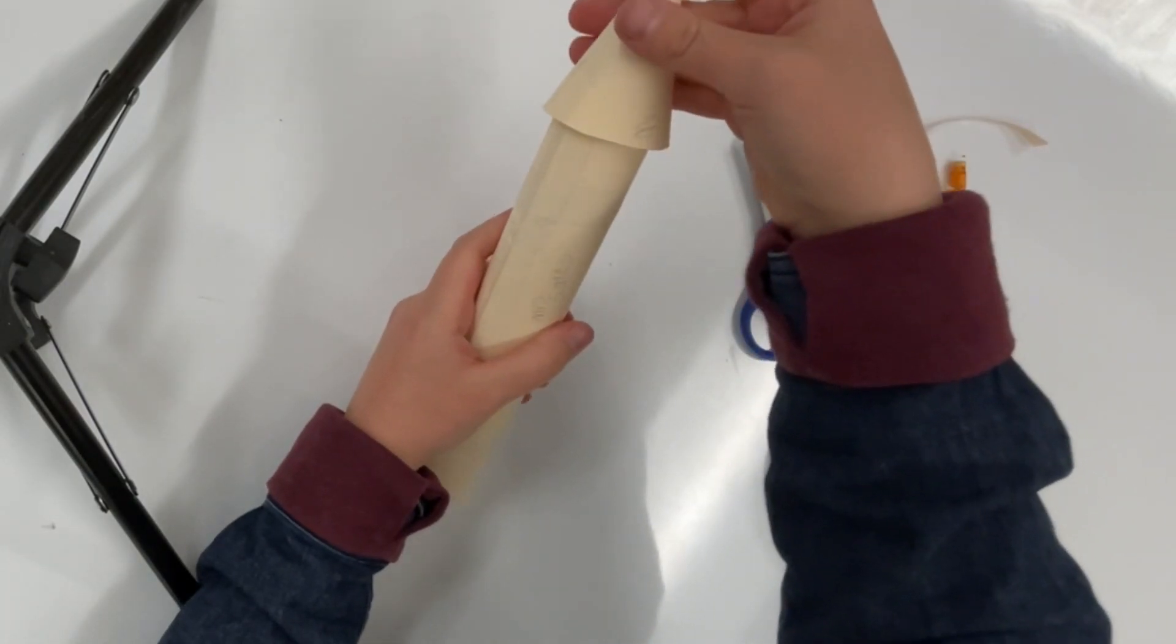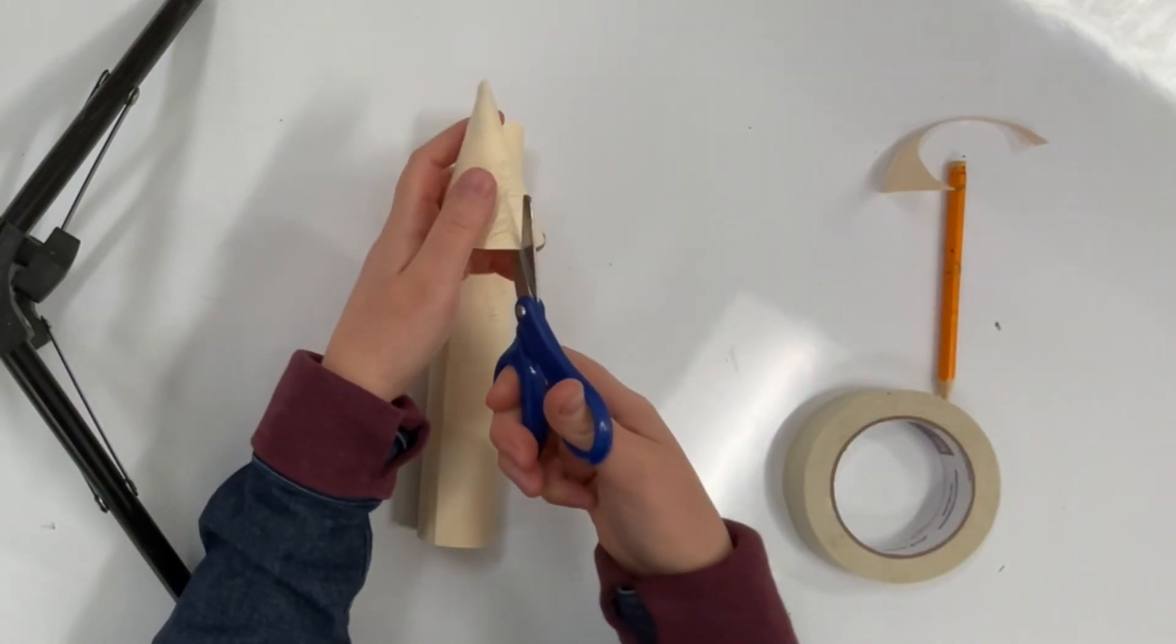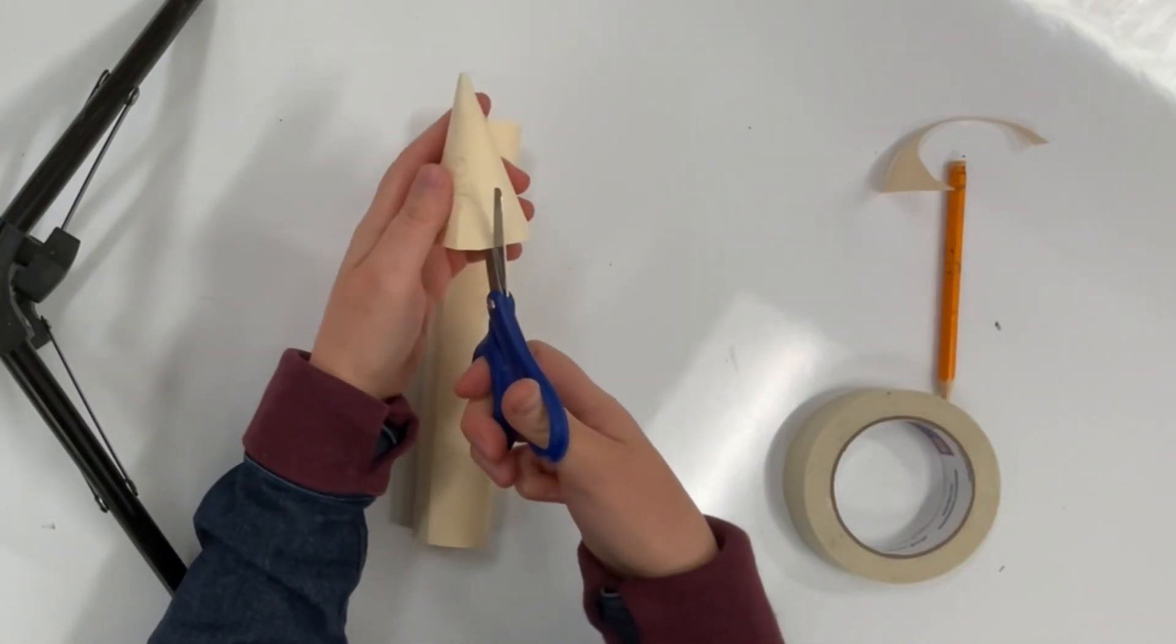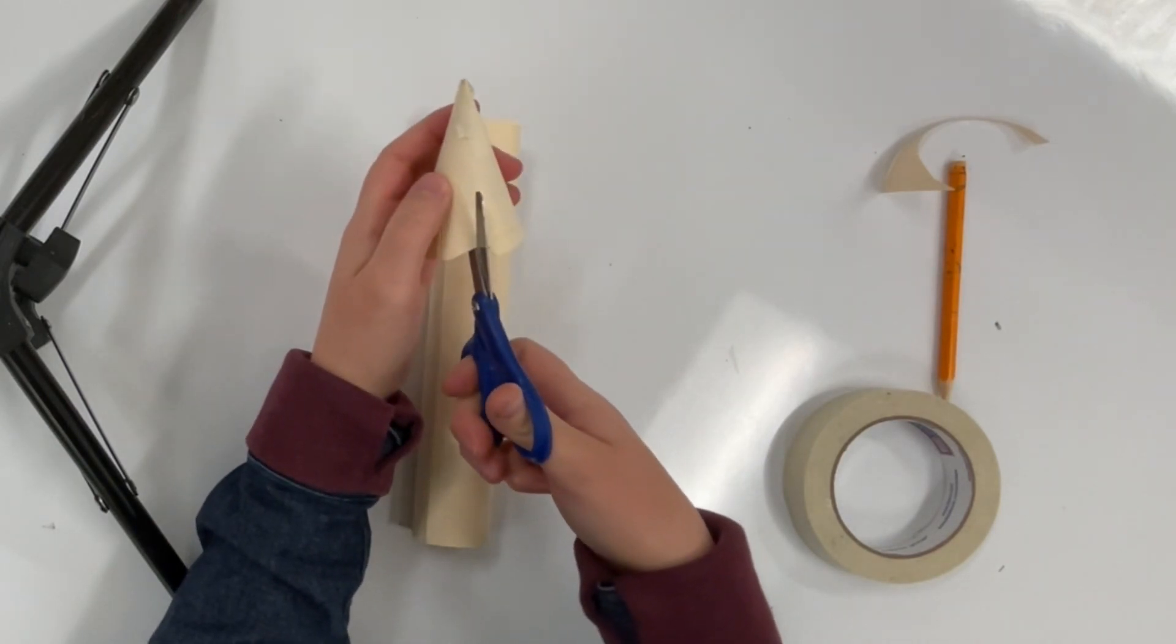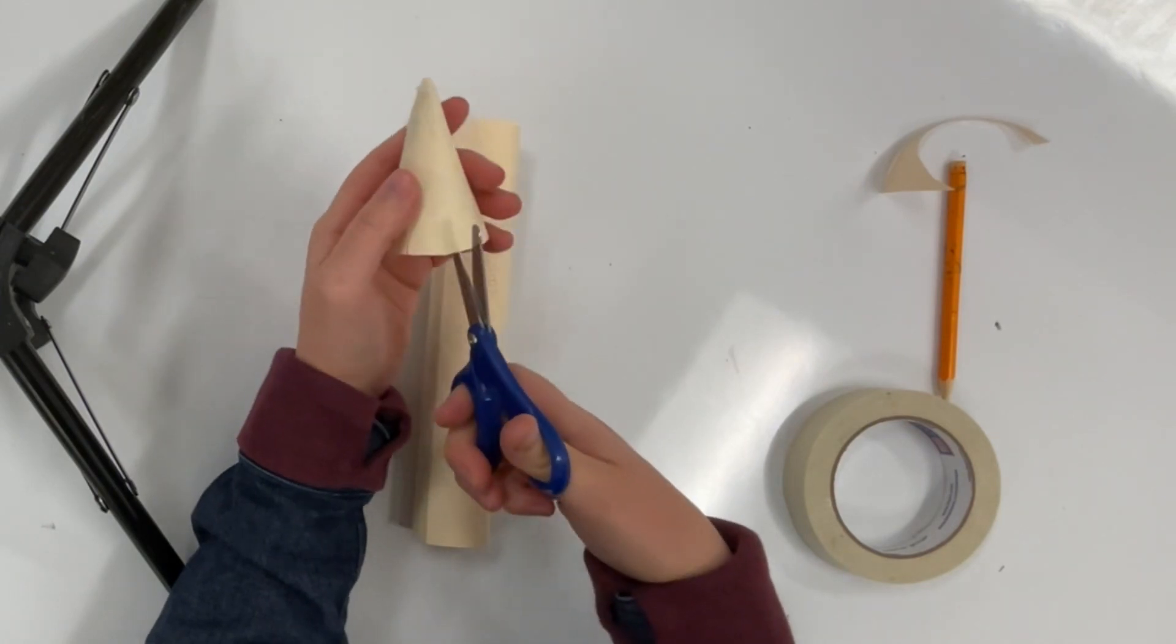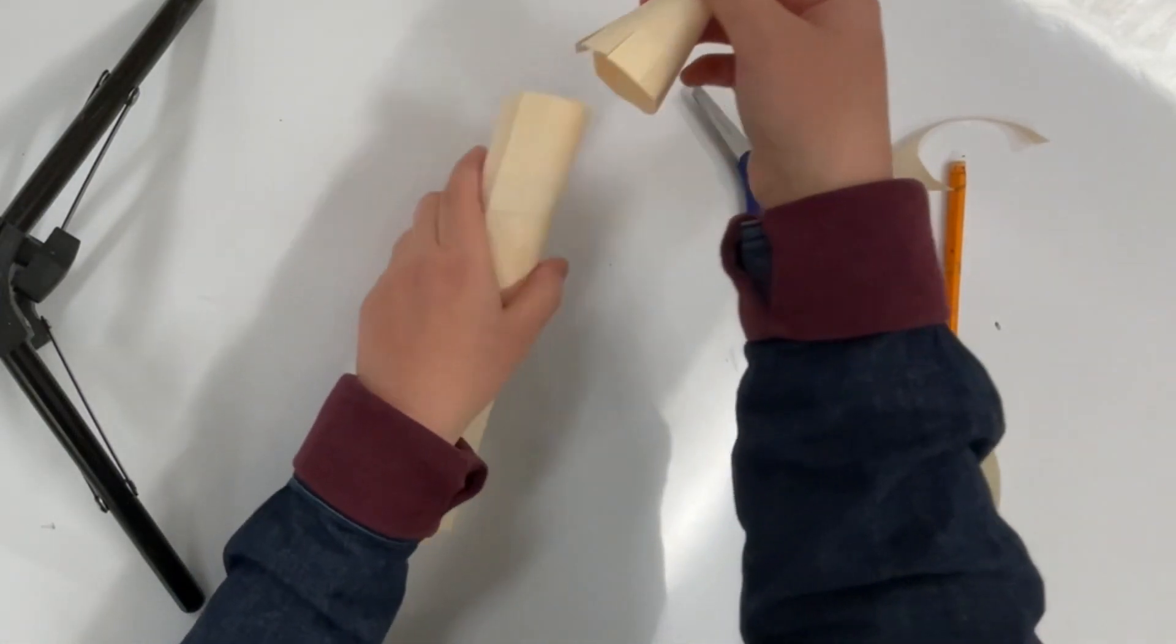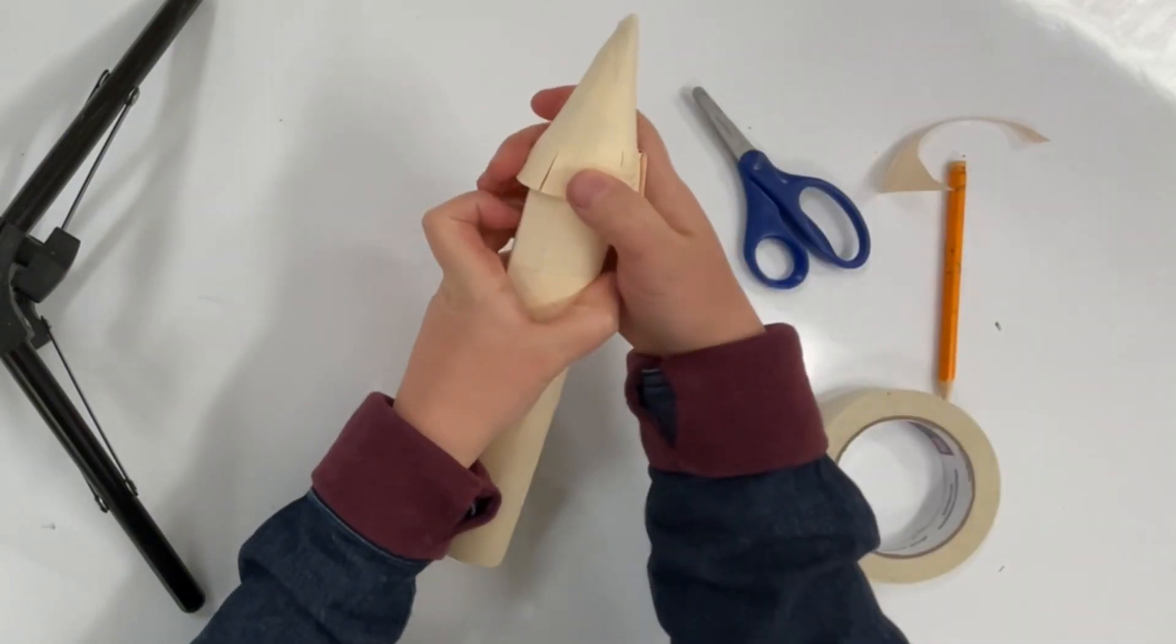So what I'm going to do is take the scissors again and I'm going to cut some little notches all around the cone. And this is going to help it sit better on the tube and it's going to make it easier when you tape it down. So notches all around. Now it sits better on the tube.